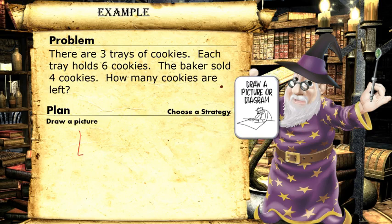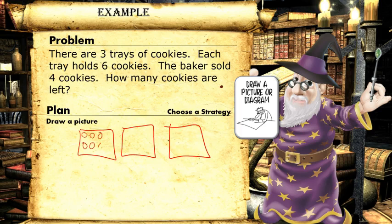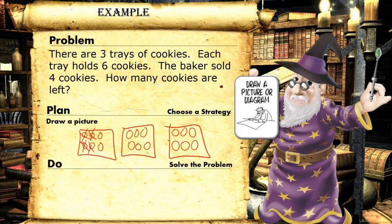There are three trays and each tray has six cookies. Then, since the baker sold four cookies, we want to take away four. So, if we connect the math to our picture, first we drew three trays of six cookies on each tray, so that's three times six. Next, we took away four, so that's subtracting four.